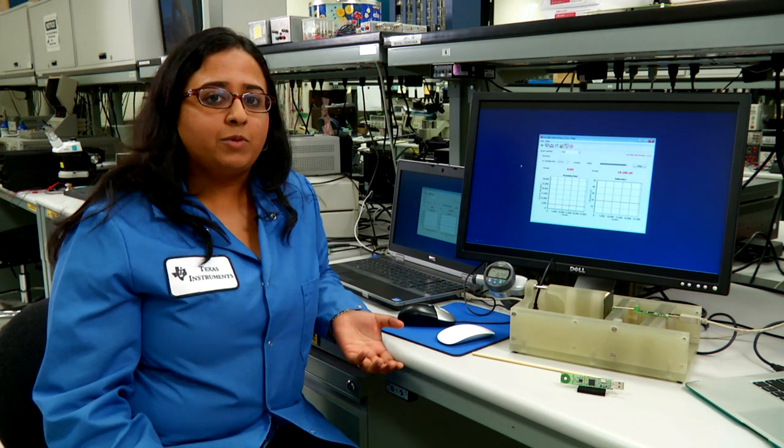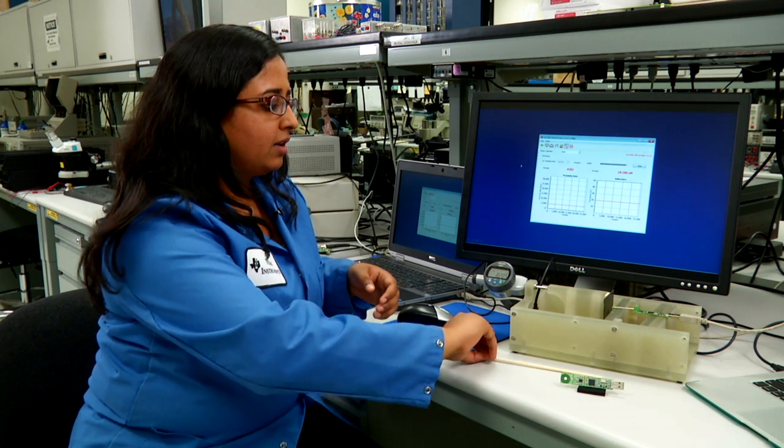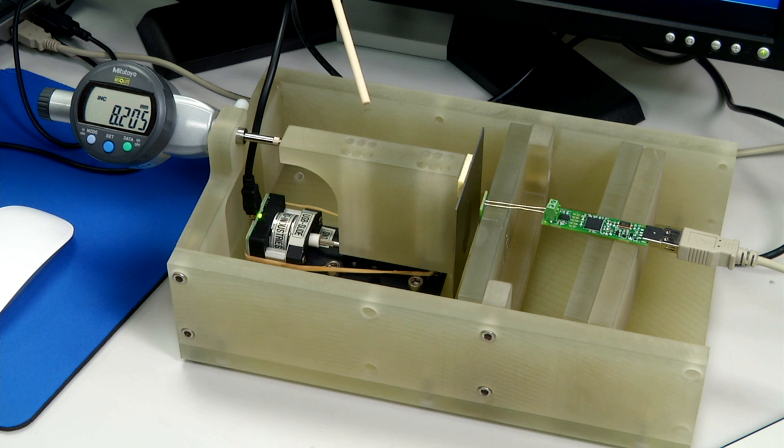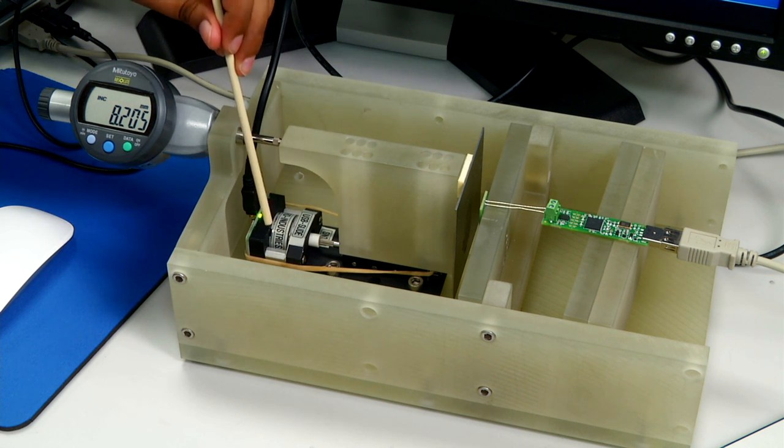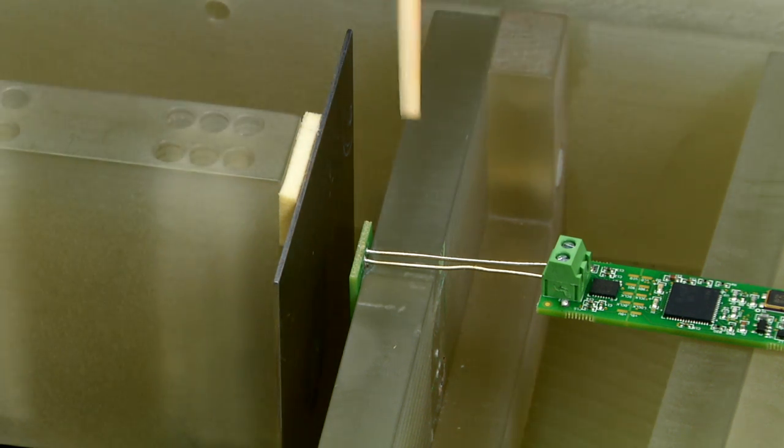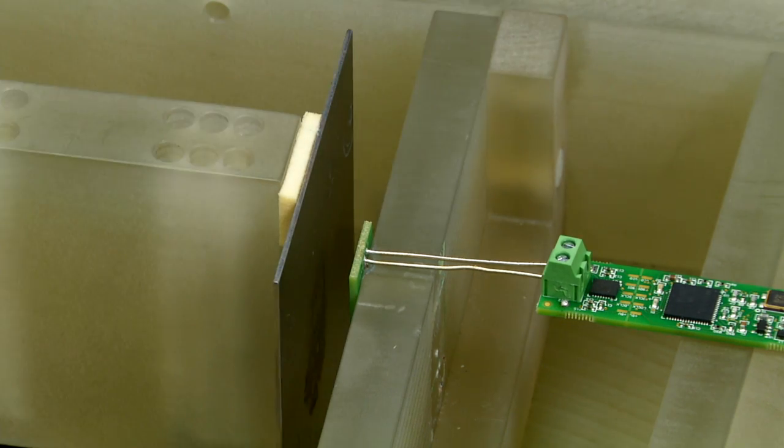The easiest way to demo this is to show you the LDC1000 EVM in action. We have a metal target that is fixed to this mount. The mount will be moved using the stepper motor that's down here. For the purpose of the demo, we snapped off the coil and put it on this mount so that it's parallel to the metal plate.